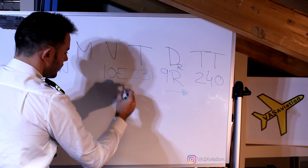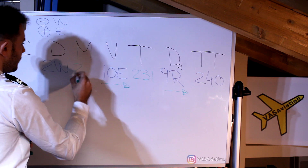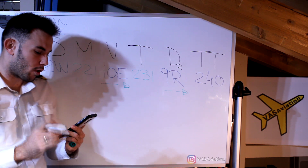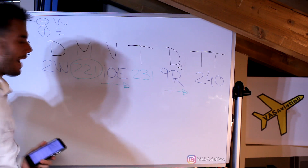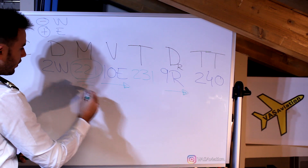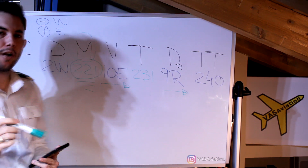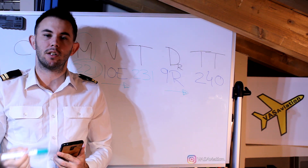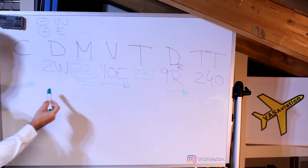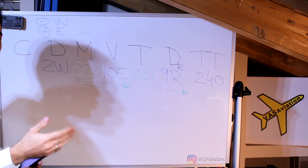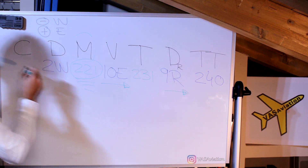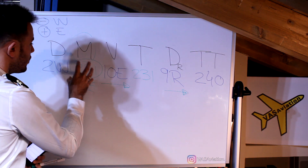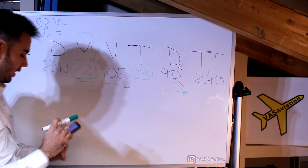Variation east — east is to the right, which means the left number is greater, so 231 minus 10 gives 221 as the magnetic heading. The question asks for magnetic heading, so we already have our answer. Be careful with this type of question: they give you deviation 2 degrees west, but we don't need it here because deviation is only used to calculate compass heading, not magnetic heading. The answer is 221 degrees magnetic.